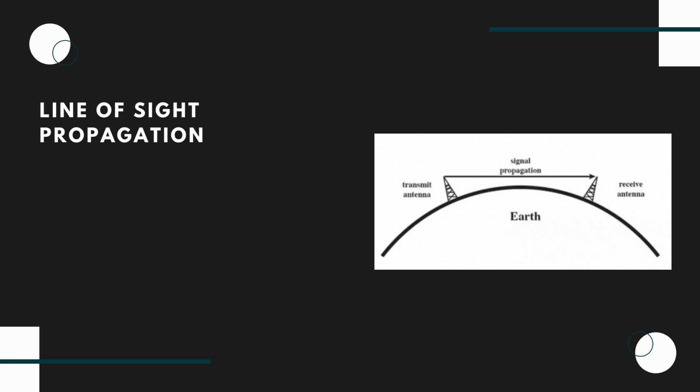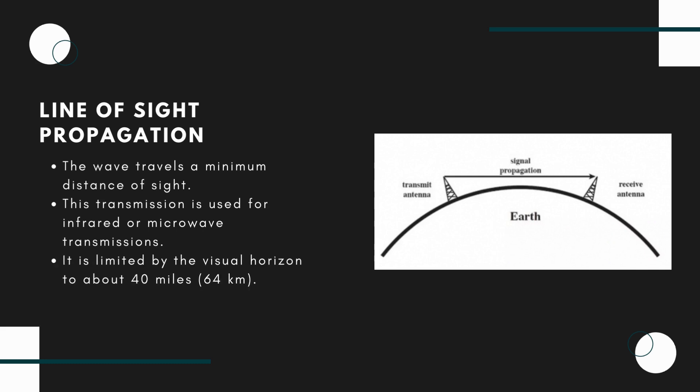In line of sight communication, the wave travels a minimum distance of sight which means it travels to a distance up to which a naked eye can see. Then we need to employ an amplifier cum transmitter here to amplify the signal and transmit it again. This transmission is used for infrared or microwave transmission. On the surface of earth, line of sight propagation is limited by the visual horizon to about 40 miles.